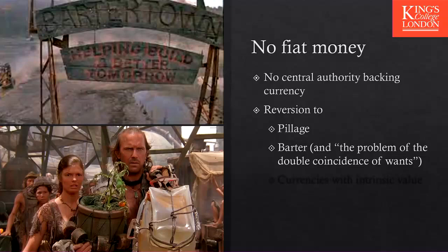The problem with barter is the problem of double coincidence of wants: I want tomatoes and you have tomatoes, and I have carrots, but you don't want carrots — so we cannot trade. I want what she has, but she doesn't want what I have, so we have to find someone else. Unless we have this double coincidence of wants, barter is not that efficient. There is anthropological evidence showing that no really complex civilization has been based on barter, because of this complication.